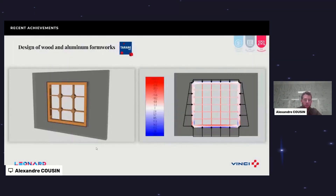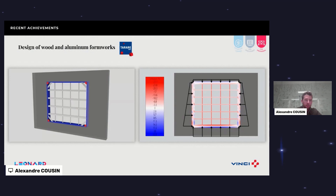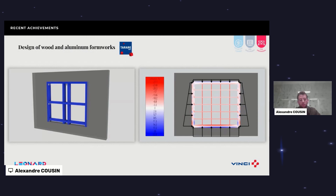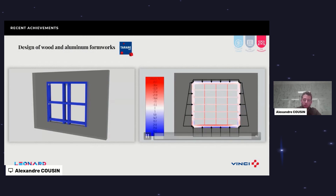Some examples: on formworks, we have people at Vinci working on creating formwork layouts, considering loads and different options to find the best disposition — something not too expensive and respectful of the environment. One use case is to optimize the wood and aluminium frameworks used on site.